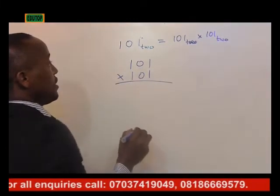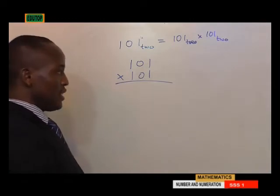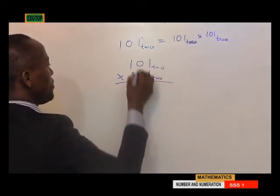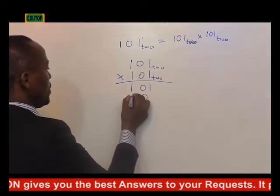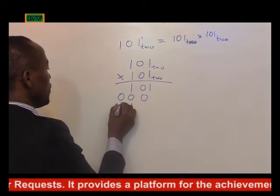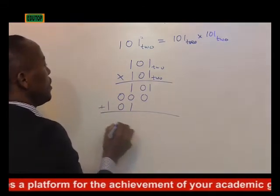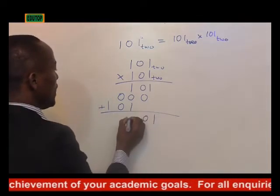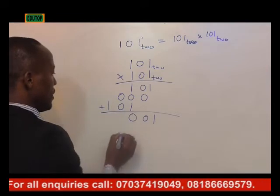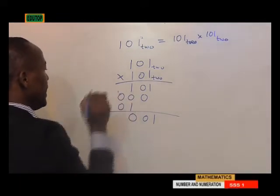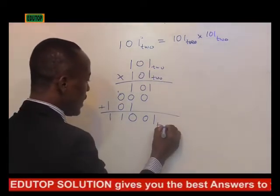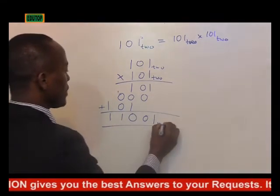So: 1 times 1 gives 1, 1 times 0 gives 0, 1 times 1 gives 1. Then 0 times 1 gives 0, 0 times 0 gives 0, 0 times 1 gives 0. Then 1 times 1 gives 1, 1 times 0 gives 0, 1 times 1 gives 1. Now adding the partial products: 1 plus 1 in base 2 is 2, and 2 divided by 2 gives 1 remainder 0, so we write 0 and carry 1. Then 1 plus 0 plus 0 gives 1, giving us our final answer using the direct method.